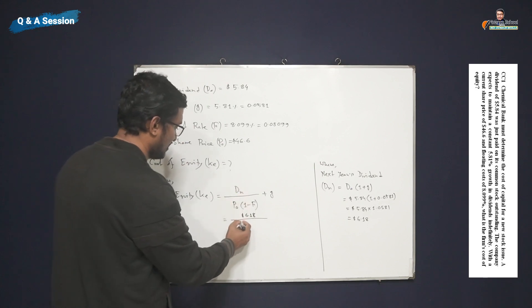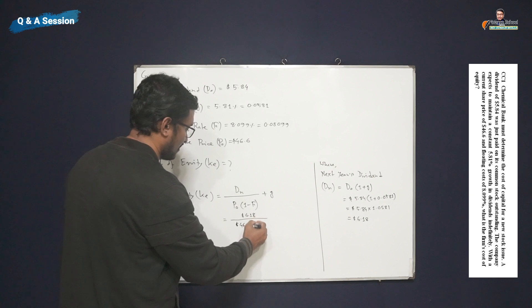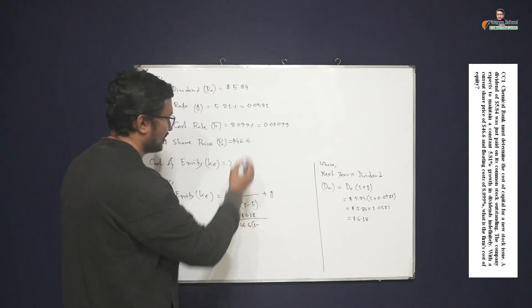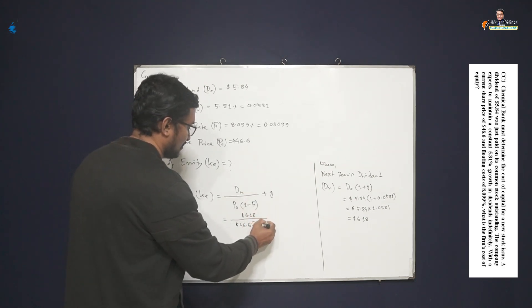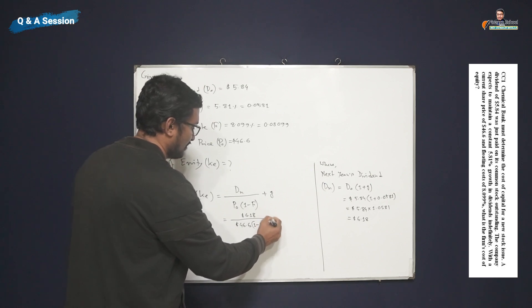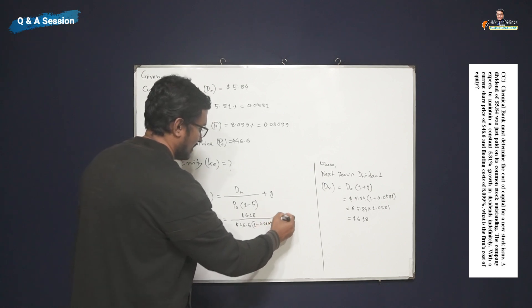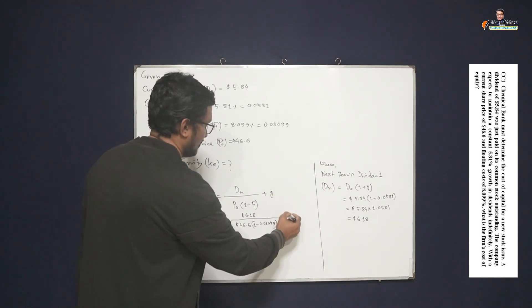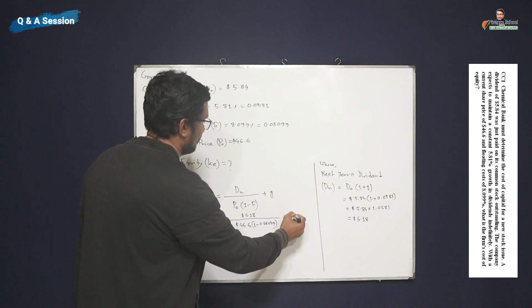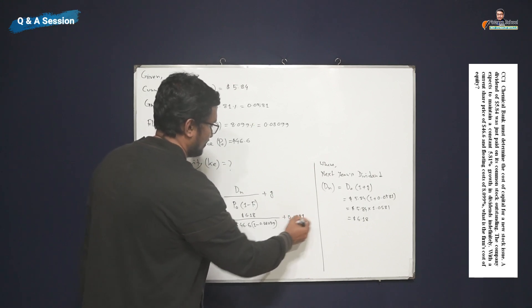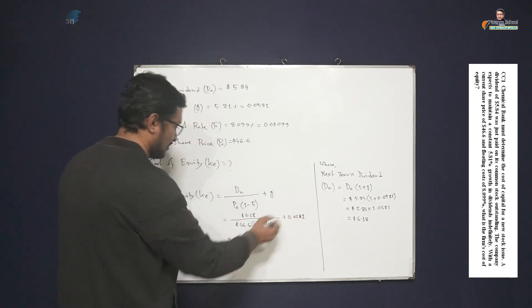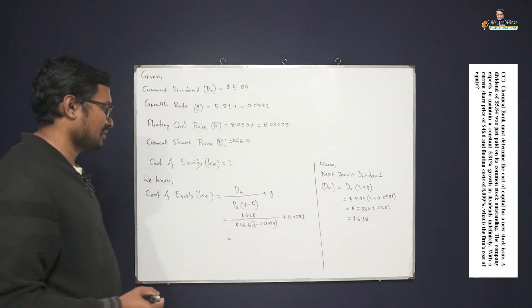Here we will write 6.18 divided by P₀, which is 46.6, times (1 - 0.08099), and here growth rate we have to write 0.0581. So this will be the input into the equation from the data we have.